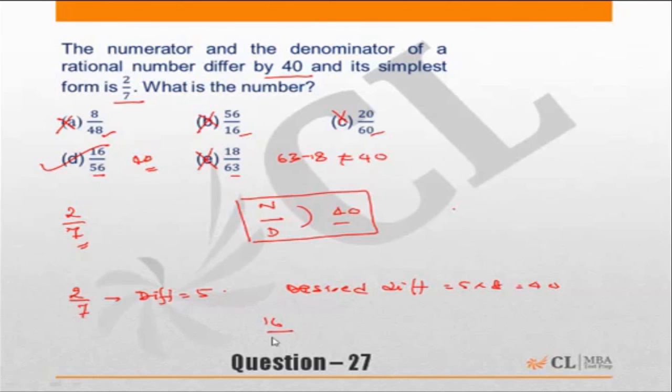So multiply both the numerator and denominator by 8. So it will become 2 into 8 is 16, 8 into 7 is 56. Not a difficult method at all. We can do the question this way also.